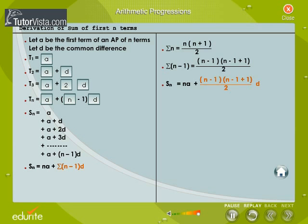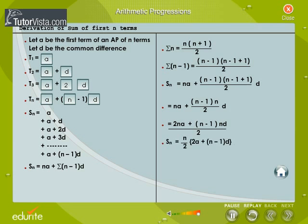We substitute this value of sigma n minus 1 in the right hand side of the equation. We simplify the terms. We get the formula Sn is equal to n by 2 times 2a plus n minus 1 into d.